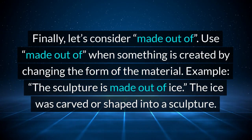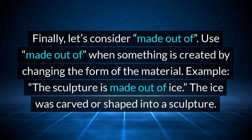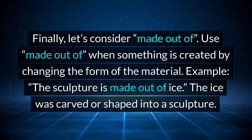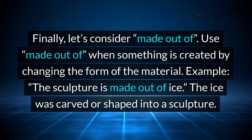Finally, let's consider 'made out of.' Use 'made out of' when something is created by changing the form of the material. Example: the sculpture is made out of ice. The ice was carved or shaped into a sculpture.